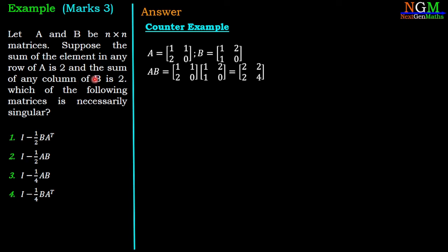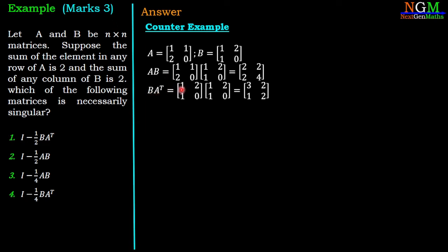Now we multiply A with B. So AB equals [1 1; 2 0] multiplied with [1 2; 1 0], which gives [2 2; 2 4]. Next we take the multiplication of B with A transpose: [1 2; 1 0] multiplied with A transpose [1 2; 1 0], and we get [3 2; 1 2].